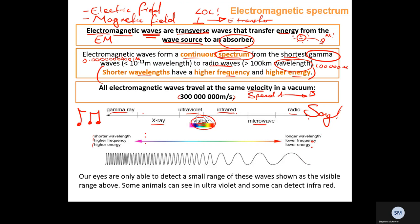Visible light is made up of ROYGBIV — red, orange, yellow, green, blue, indigo, and violet. You read it from red to violet. This is the only part of the electromagnetic spectrum that we are able to see, though some animals can detect ultraviolet like honeybees, and some can detect infrared like snakes.